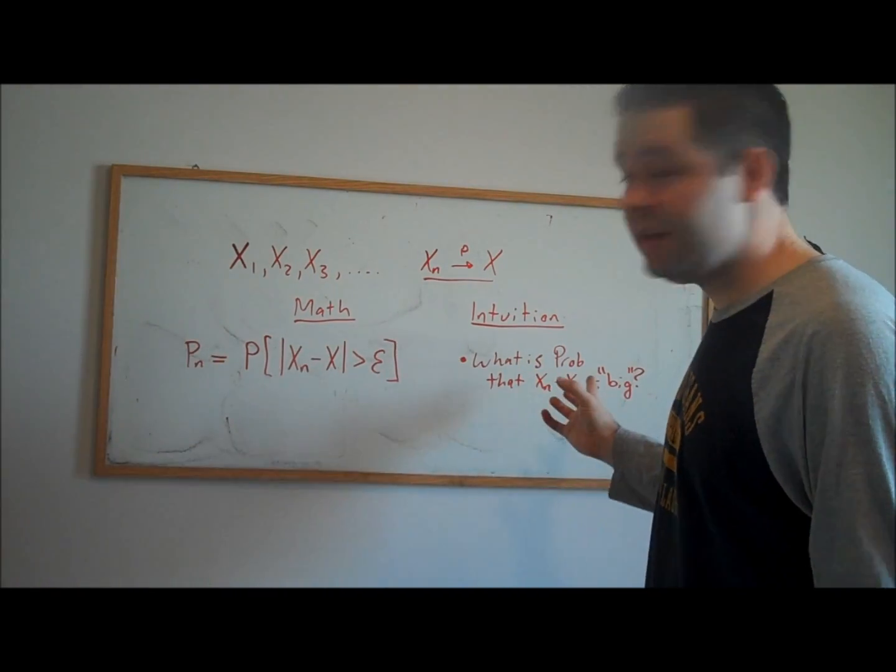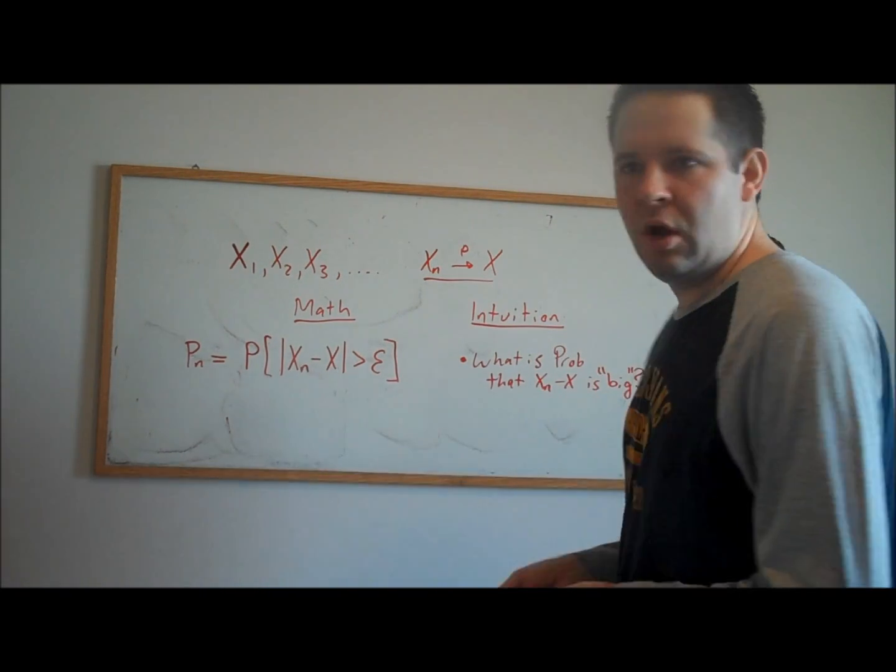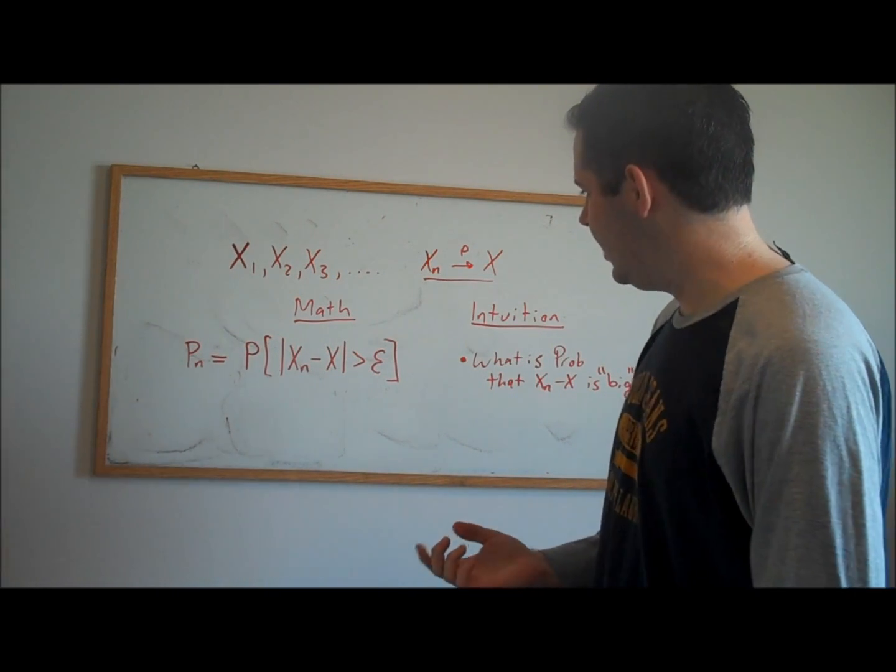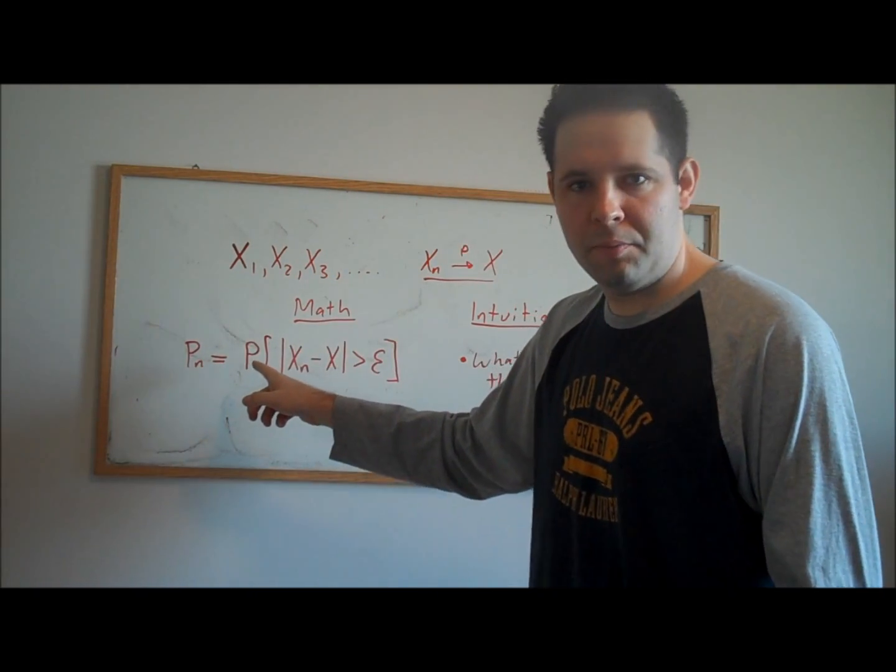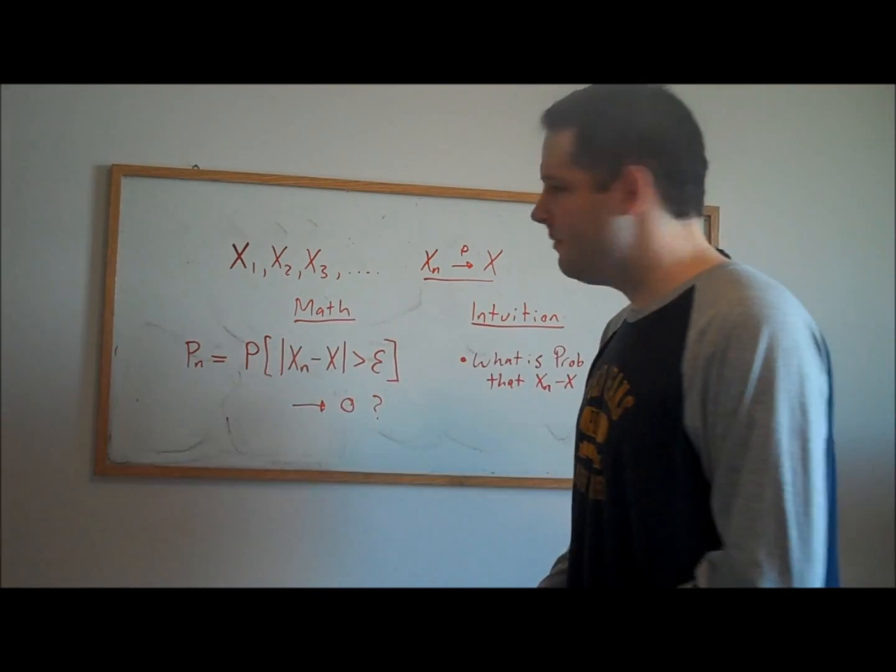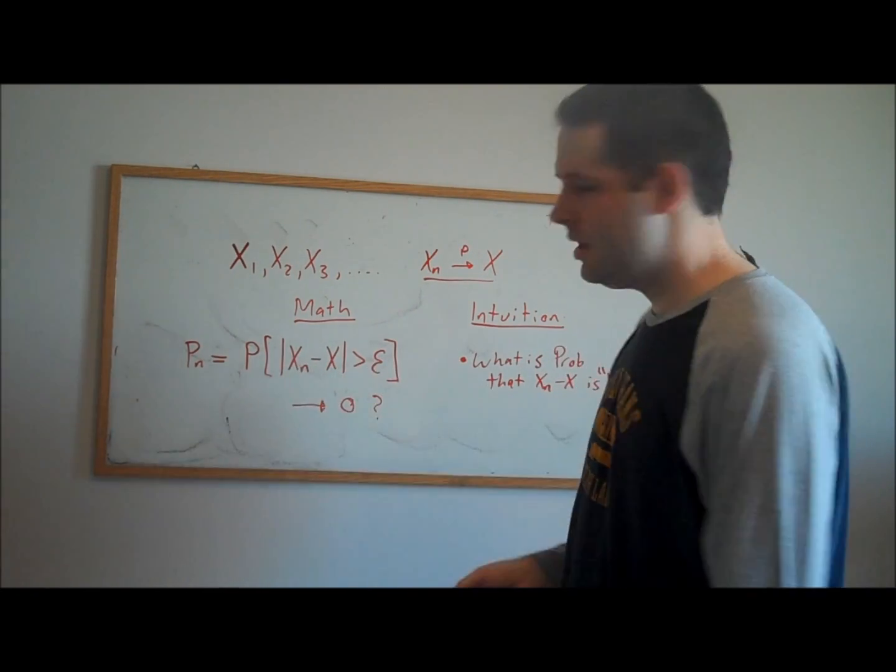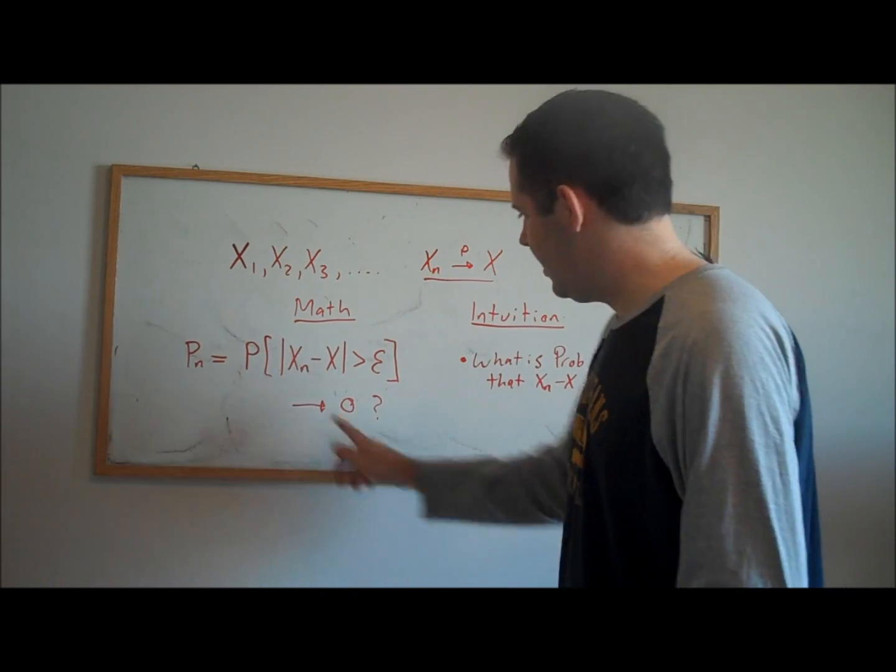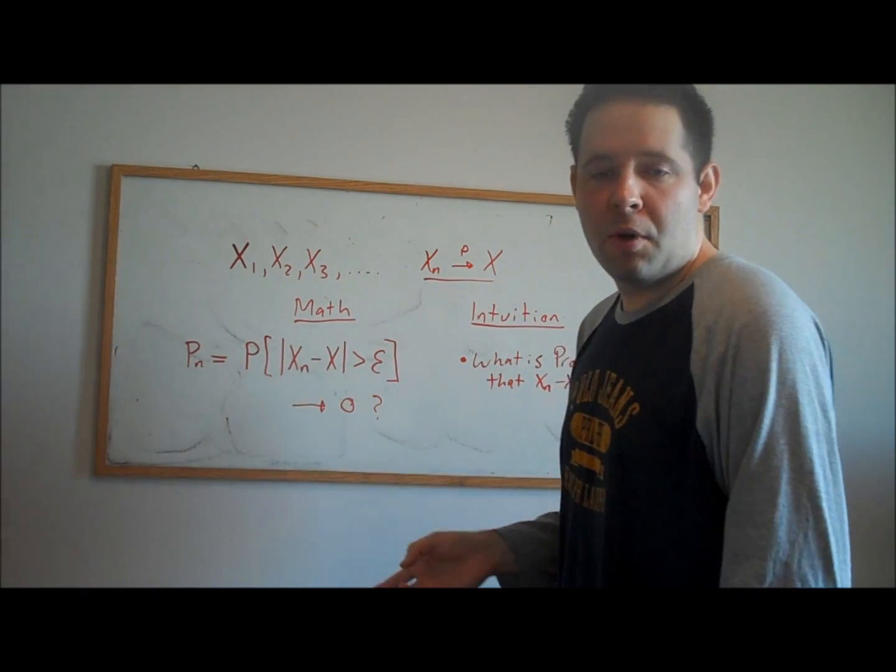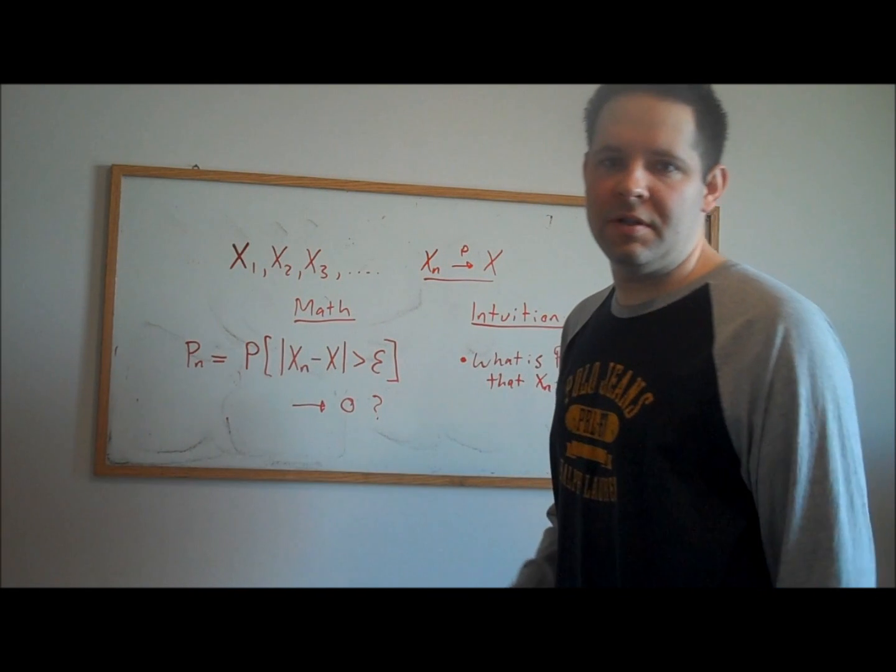If this probability were high, there'd be something different about Xn and X that is irreconcilable. All we need to do for convergence in probability is ask, does this sequence of probabilities converge to zero? If this sequence of probabilities converges to zero, then we know that Xn converges to X in probability. For a big enough n, Xn is equal to X in the sense that there's no probability for any small positive constant, there's no probability of the difference being big.